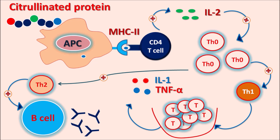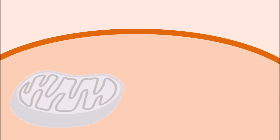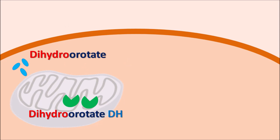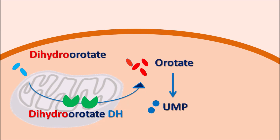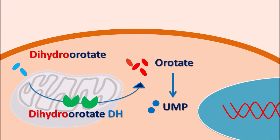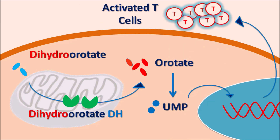Leflunomide targets the activation of T cells. For T cell activation, nucleic acids are required, and pyrimidine nucleosides are supplied through de novo synthesis of pyrimidines. One important intermediate is dihydroorotate, which is converted by the enzyme dihydroorotate dehydrogenase (DHODH) into orotate. Orotate is then converted into UMP (uridine monophosphate), and these pyrimidine nucleosides are incorporated into DNA and RNA, which are responsible for T cell proliferation. Activated T cells release cytokines, producing an inflammatory response.